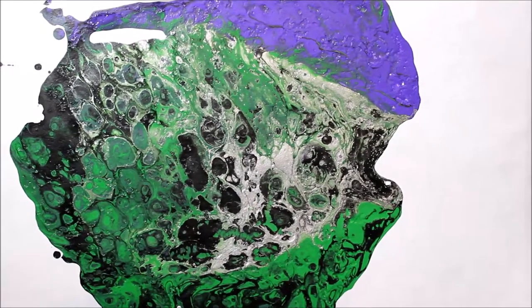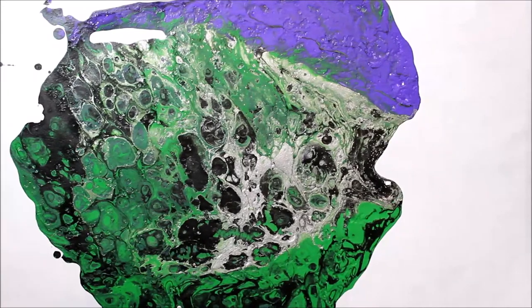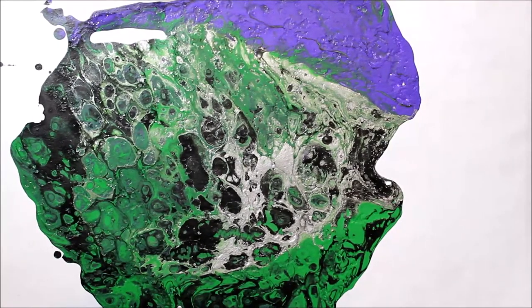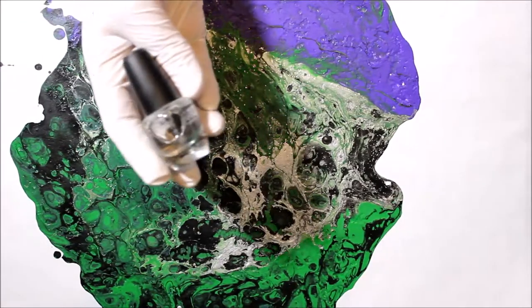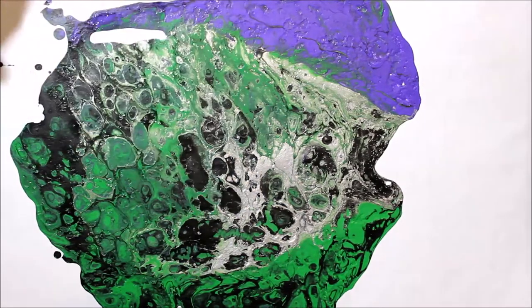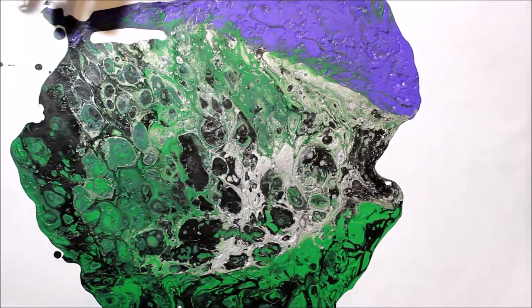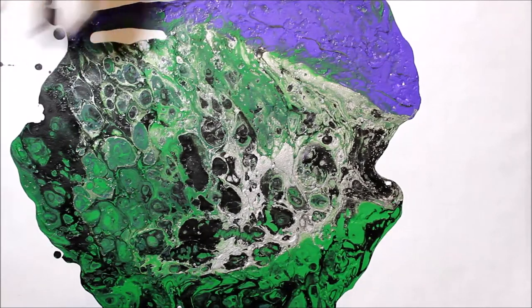All right, we are back. We have some nice dried acrylic paints here. The purple didn't stand out too much, and I've tried to use a top coat of clear nail polish over this area here to see if that would make any of the colors more vibrant.